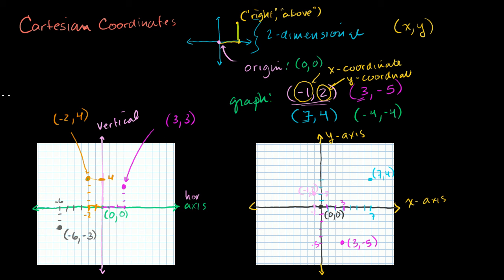And finally the point minus 4, minus 4. This tells me 4 to the left of my origin: 1, 2, 3, 4 — that's an x-coordinate of minus 4. And this tells me 4 down: 1, 2, 3, 4 — that's a y-coordinate of minus 4. So it's 4 to the left, 4 down, right there at minus 4, minus 4.